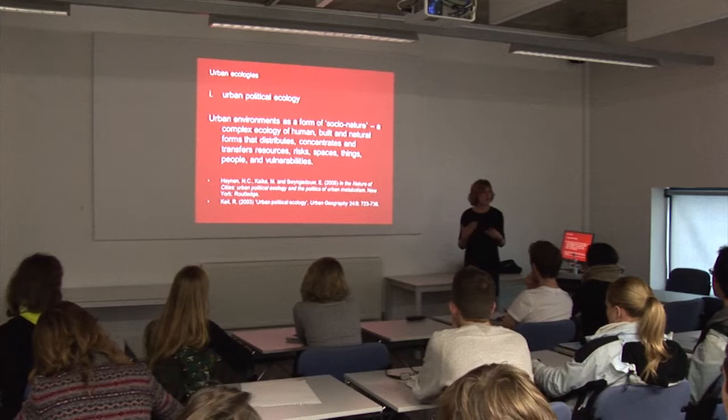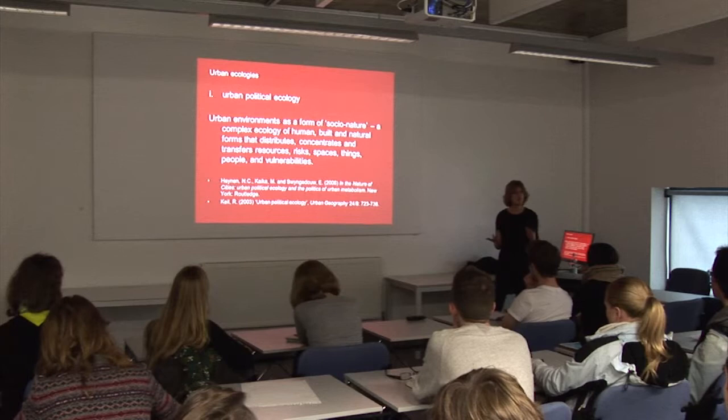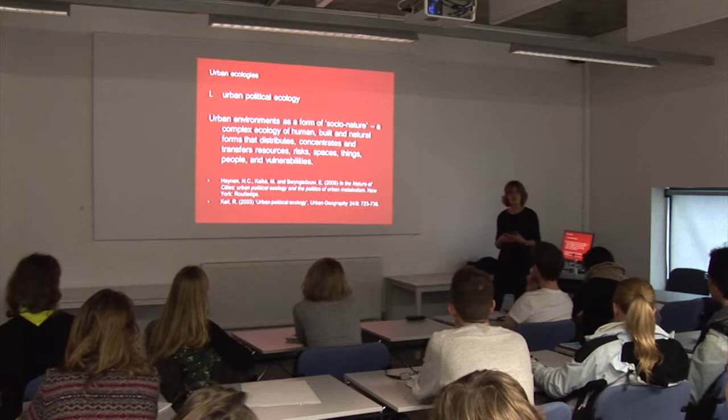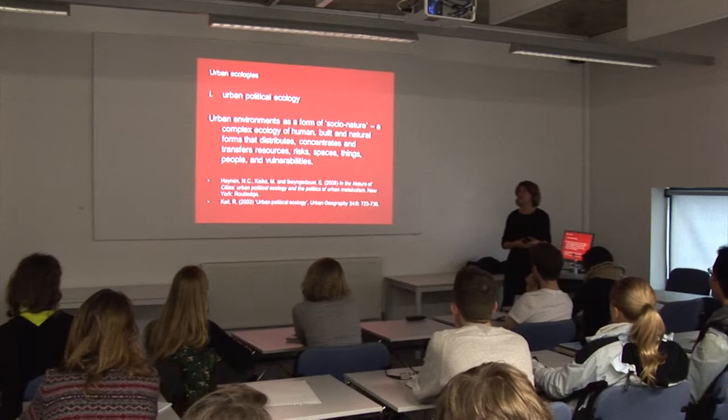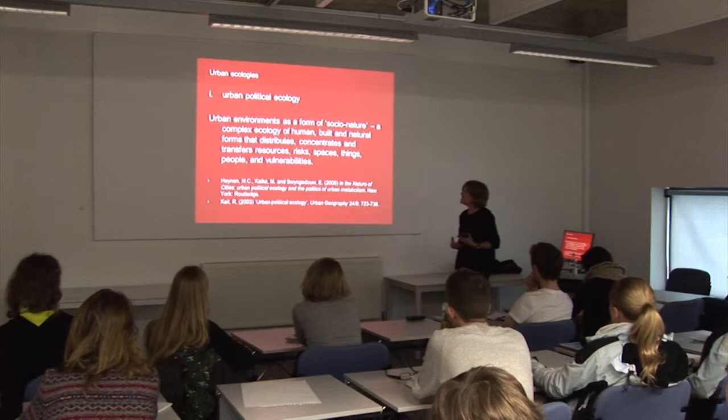Urban political ecology wants to put into question conventional distinctions between the urban and the natural — the built and the natural environments — by thinking about cities as a kind of socio-nature. A pattern of human settlement that goes to work on nature and transforms it interactively, rather than something which is denatured, the other of nature. So cities, urban environments, we can think about in terms of these complex ecologies of different elements: the human, built, and natural forms.